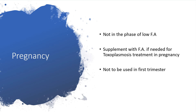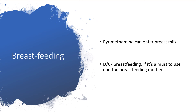In pregnancy, we will not give pyrimethamine in the face of low folic acid. But if there is toxoplasmosis in pregnancy and you want to treat it with pyrimethamine, supplement with folic acid. In the first trimester of pregnancy, don't use pyrimethamine at all. In breastfeeding mothers, note that pyrimethamine can enter breast milk. Discontinue breastfeeding if it is a must to use it.